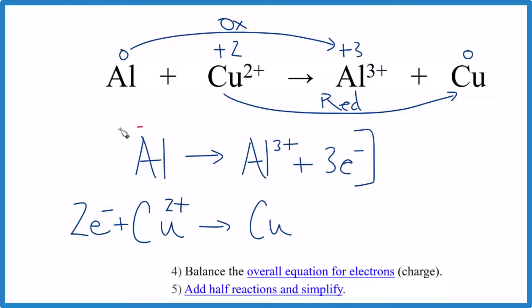To do that, we could just multiply this entire thing here by two, because that would give us two times three is six electrons. Down here, we can multiply it by three. Three times two electrons is six electrons. So we'll balance the overall charge for electrons.